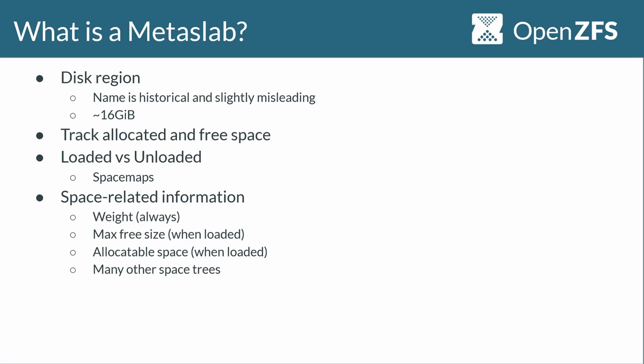One of the primary jobs of the metaslab is to track allocated and free space. When you first import a pool you know how many disks and metaslabs there are, but you don't know which sectors are currently in use. This ties into the concept of loaded versus unloaded metaslabs. On import, all metaslabs are unloaded. When we need to allocate something, we need to load a metaslab to know which sectors are free. There's an on-disk data structure called a space map; we read it into memory and convert it into an in-memory data structure to find allocatable space.